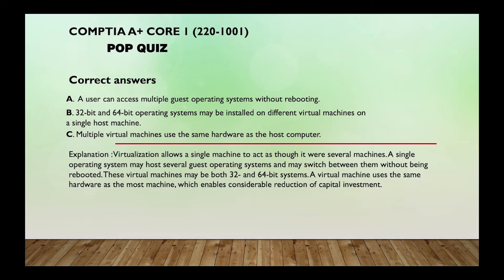Correct answers are A, B, and C. Explanation: Virtualization allows a single machine to act as though it were several machines. A single operating system may host several guest operating systems and may switch between them without being rebooted. These virtual machines may be both 32 and 64-bit systems. A virtual machine uses the same hardware as the host machine, which enables considerable reduction of capital investment.